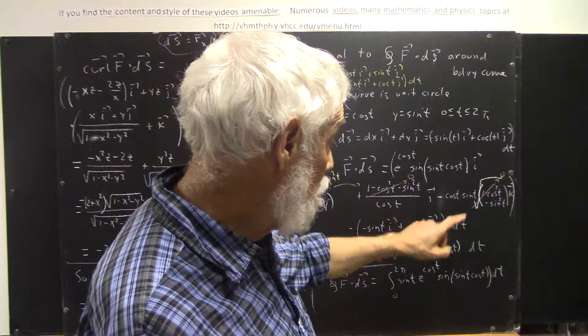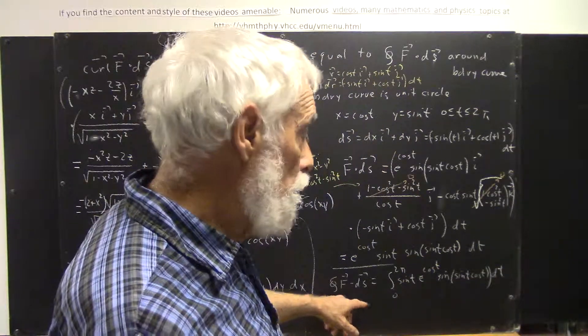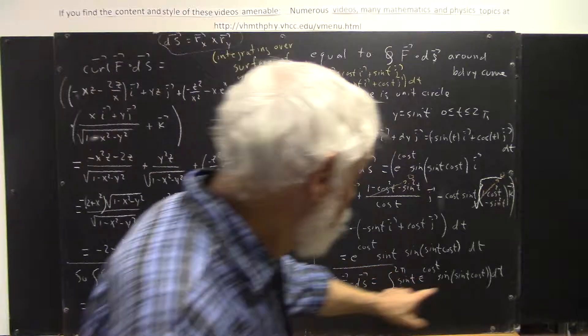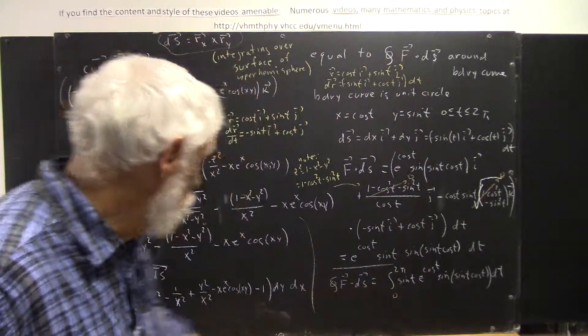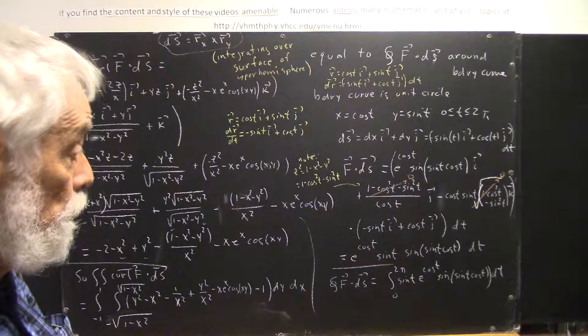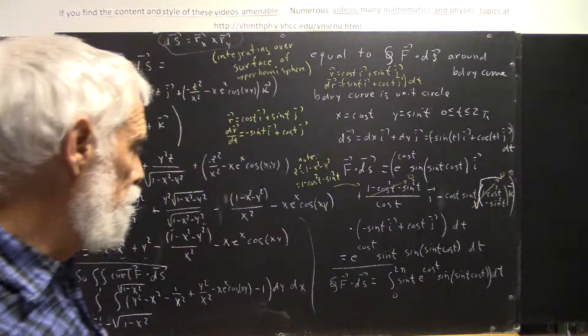And whether that's cause for joy or not depends on how you like this term. You still have e to the cosine t sine t times the sine of sine t cosine t dt. So,